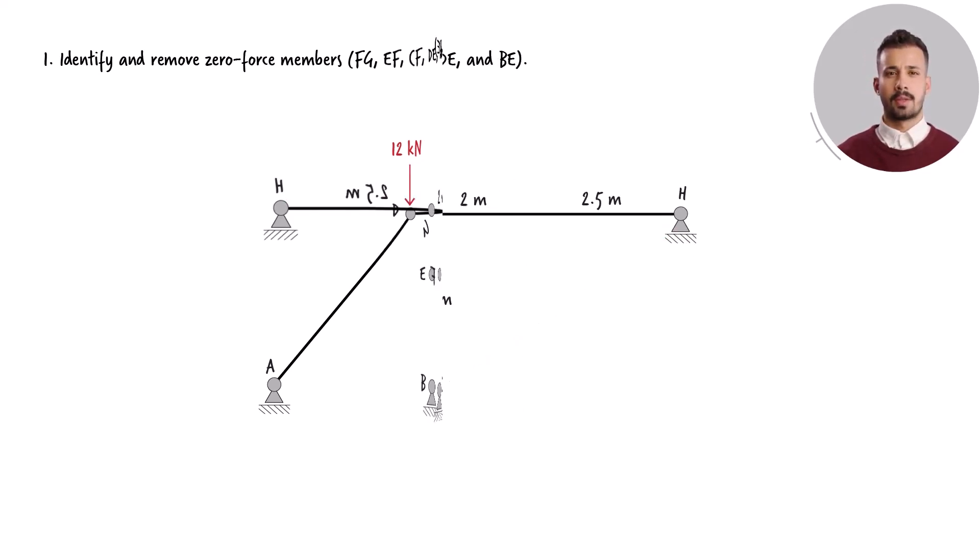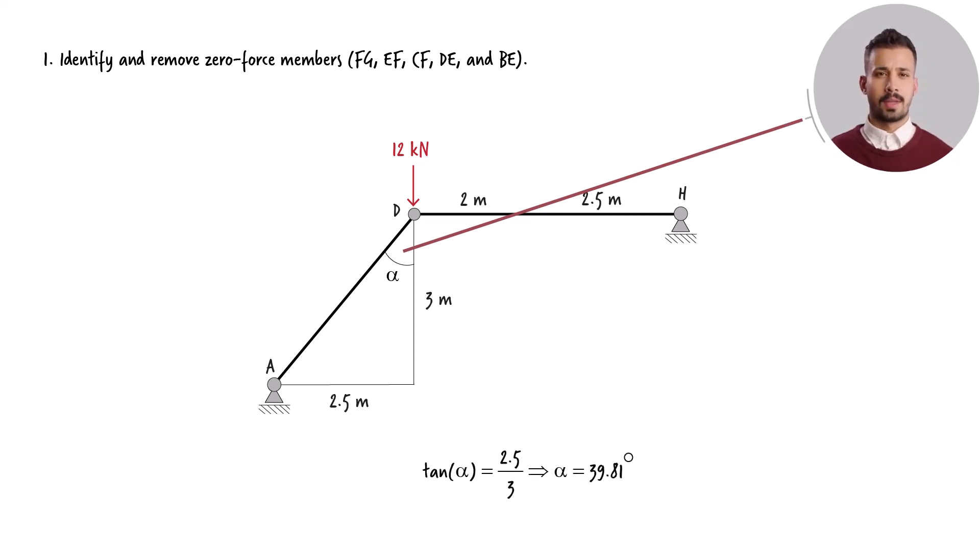So we are left with this truss, which can be easily analyzed using the method of joints. This inclination angle equals 39.81 degrees.